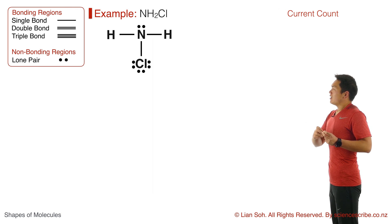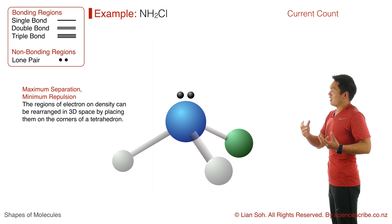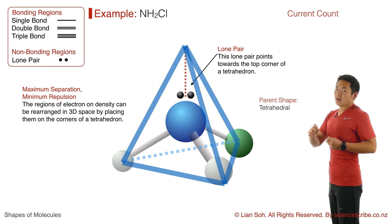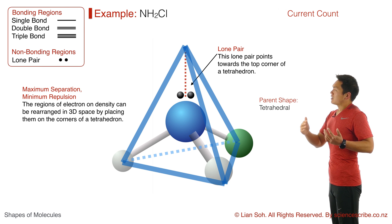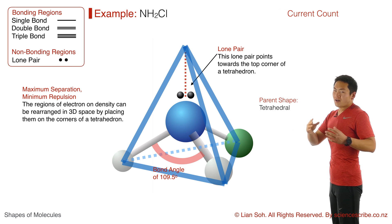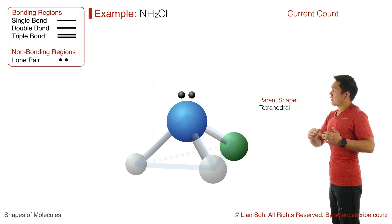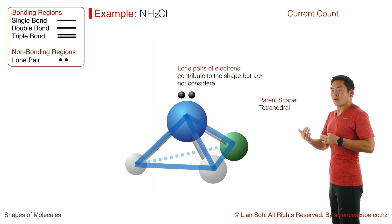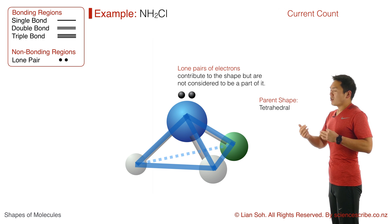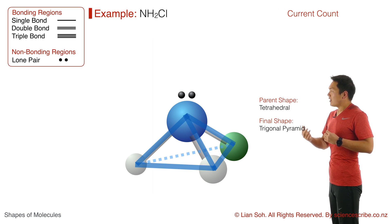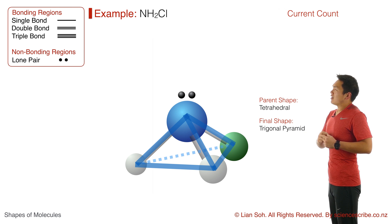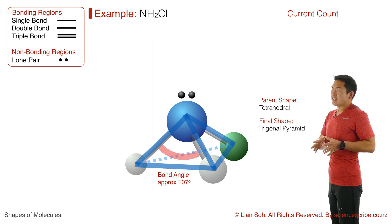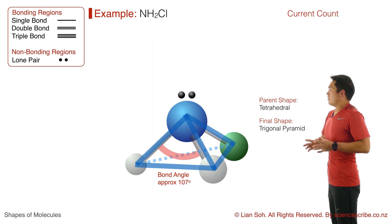When you arrange all four regions, you do end up going back to a parent shape that looks like a tetrahedron. But because the lone pair contributes to the shape without being considered part of it, the overall shape looks more like a pyramid. Since it has a triangular base, we describe this shape as trigonal pyramidal or triangular pyramidal. The bond angles won't be 109.5 degrees anymore — they'll be a bit less, approximately 107 degrees.